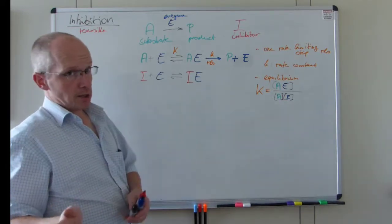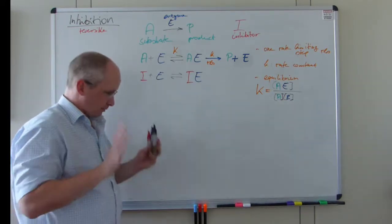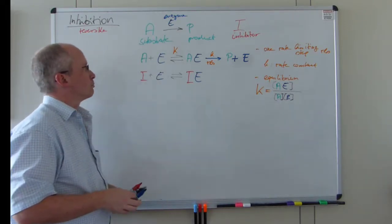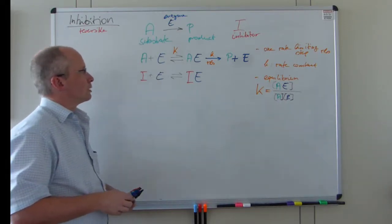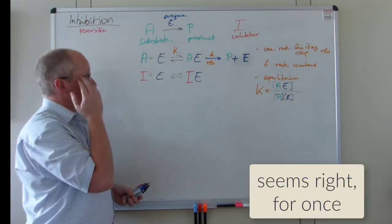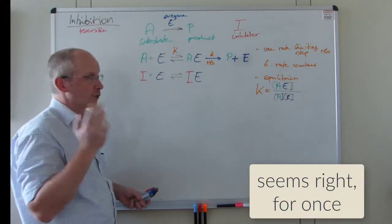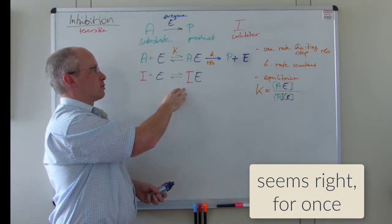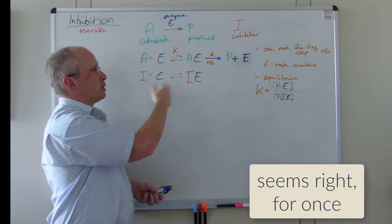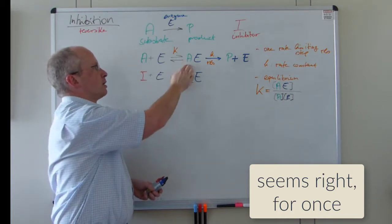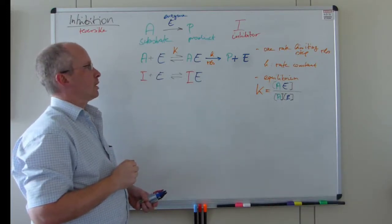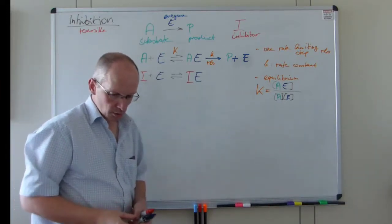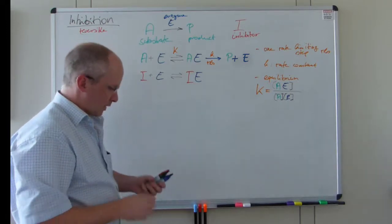This is probably competitive inhibition — thinking of it as competing for the same active site. So there is one active site which can either be occupied by the substrate or by the inhibitor. And we have a second equilibrium here.